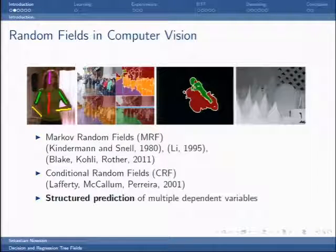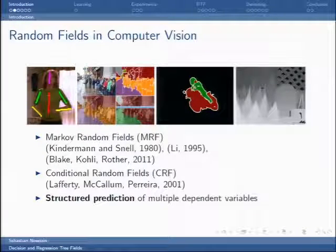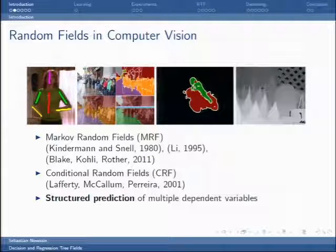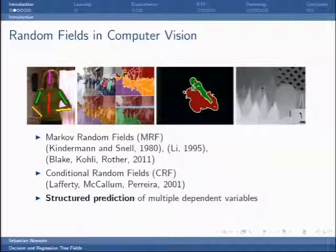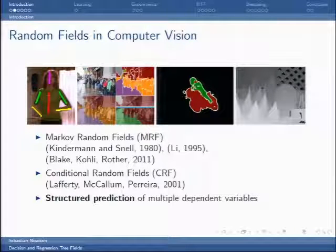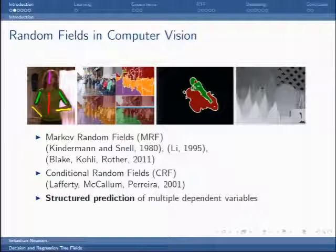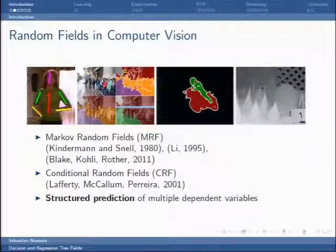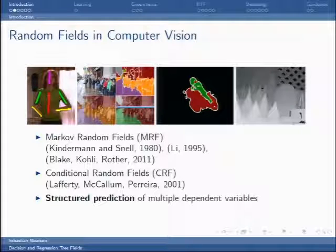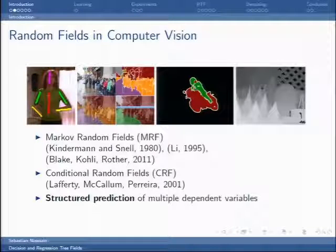So why random fields? Random fields have a big history in computer vision, almost three decades or more. Recently, around ten years ago, conditional random fields have appeared. For many of the hard structured labeling tasks such as pose estimation, semantic image segmentation, depth estimation, optical flow, these now more or less define the state of the arts with different trade-offs regarding performance and runtime.